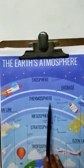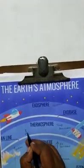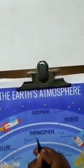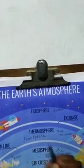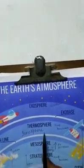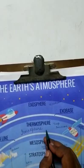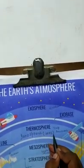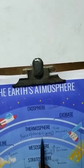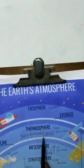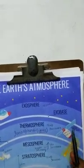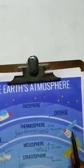Then, the thermosphere, this thermosphere is also called ionosphere. Why is this called ionosphere? Because here ions are present. That's why this thermosphere is also called ionosphere. Here you can see the space stations are available.